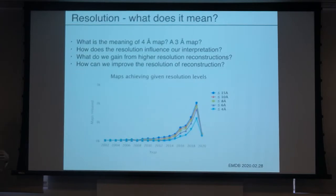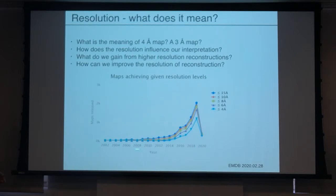Even though people always push for high resolution — and it makes everything easier — most of the structures we solve aren't actually high resolution. The light blue line represents structures better than 4 angstroms, and this is only about 40 to 50 percent. I went into the EMDB last week — something I do before I give this lecture every year. A few years ago it was maybe 5 to 10 percent. With the advent of direct detectors we started to get more, but even two years ago only about 20 percent of structures were better than 4 angstroms.